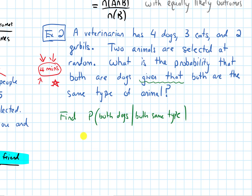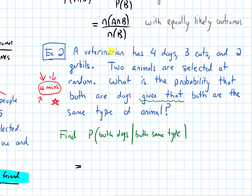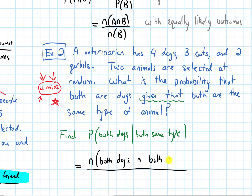Using our formula for conditional probability, because we're selecting these animals at random, we have equally likely outcomes. So I'm going to use the equally likely outcomes version of the formula and count the number of elements in each set. On the top, it's the number of elements in the intersection of the event 'both are dogs' and 'both are the same type.' On the bottom, it's the number of elements in the set where both are the same type.